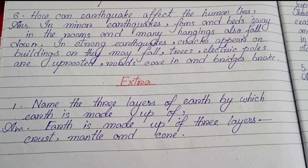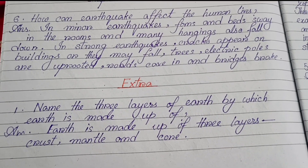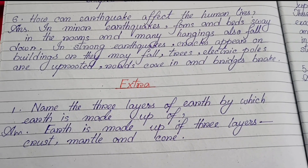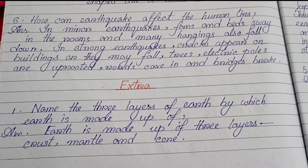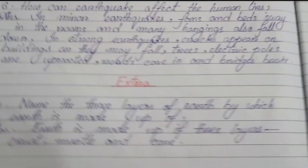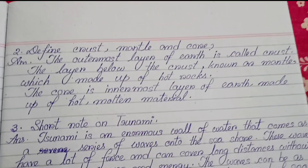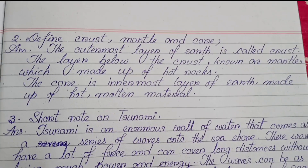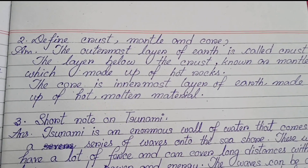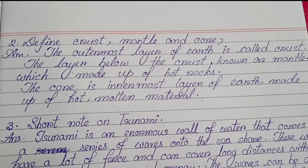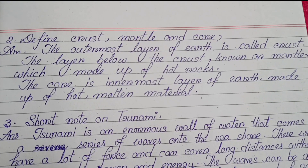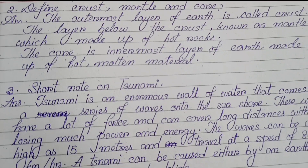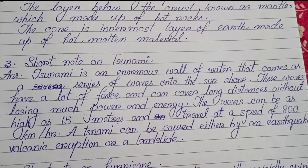Now it's time for extra question answers. Number one: Name the three layers of the earth. The earth is made up of three layers: crust, mantle and core. Number two: Define crust, mantle and core. The outermost layer of the earth is called the crust. The layer below the crust is known as the mantle, which is made up of hot rocks. The core is the innermost layer of the earth, made up of hot molten materials.